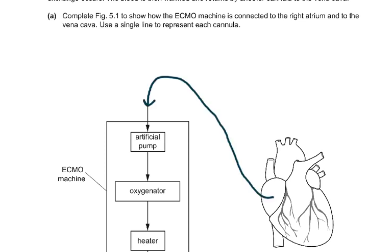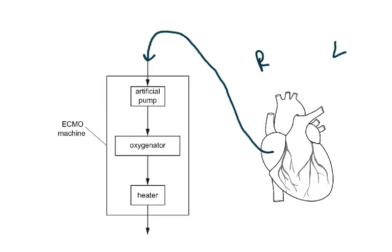To draw the connections: the right atrium is on the right side of the heart. When connecting to the artificial pump, you connect from the right atrium to the machine. Then returning blood has to go to the vena cava — it can go to either the superior or the inferior vena cava, so it is not critical which one is chosen.